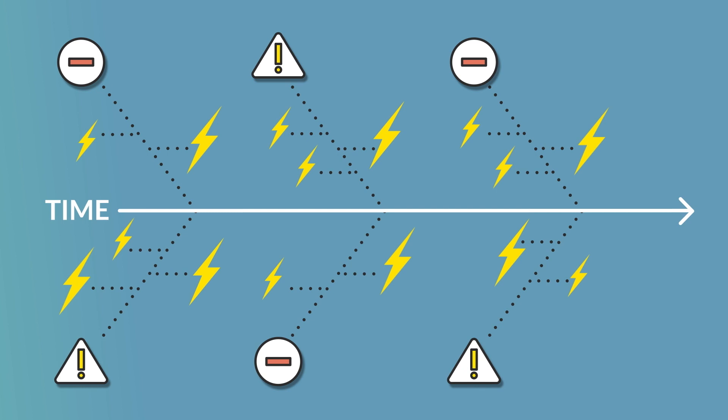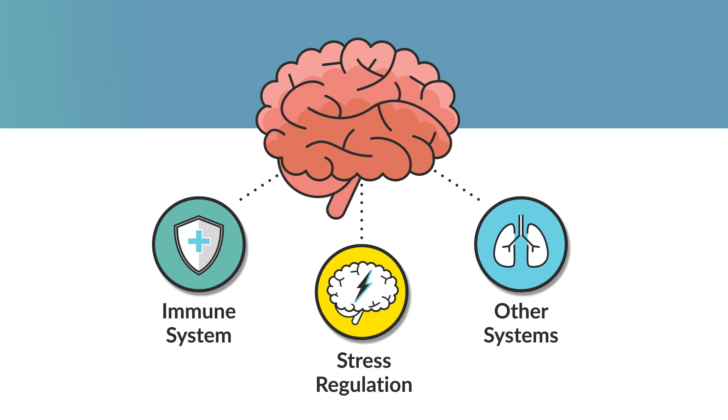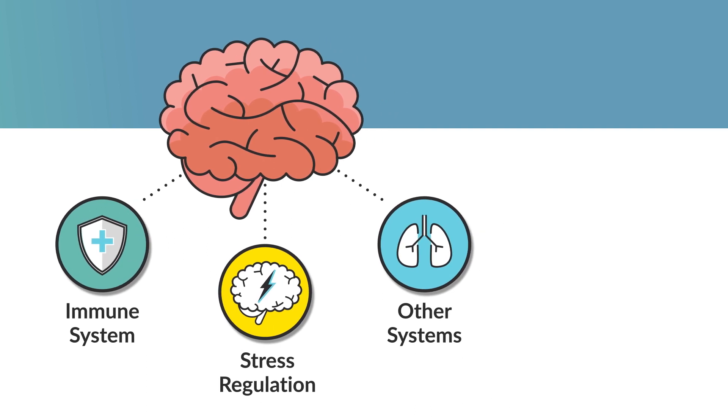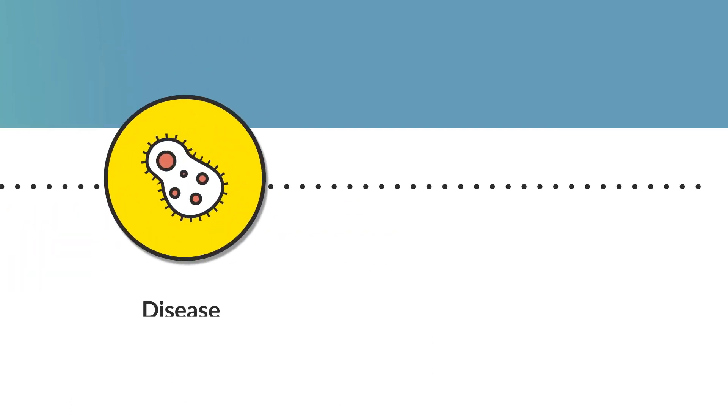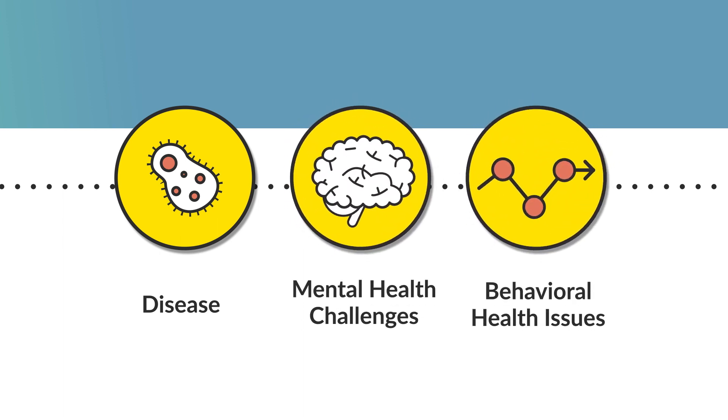The brain of a woman appears on screen. Yellow dotted lines extend from the brain throughout the body. The woman appears uncomfortable as she looks around the screen. Toxic stress can alter the architecture of the brain and negatively impact the development of our immune system, stress regulation, and other systems in the body. These biological changes make us more prone to disease, mental health challenges, and behavioral health issues.